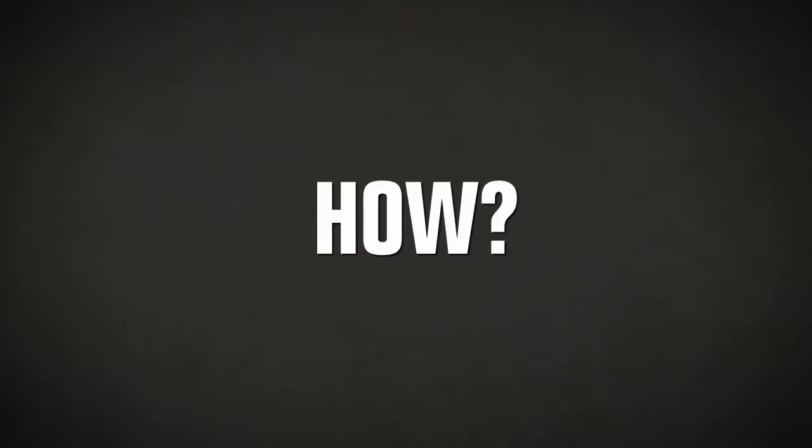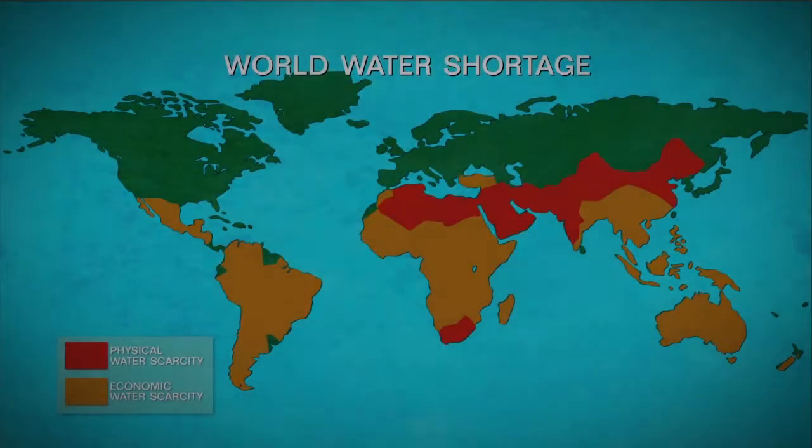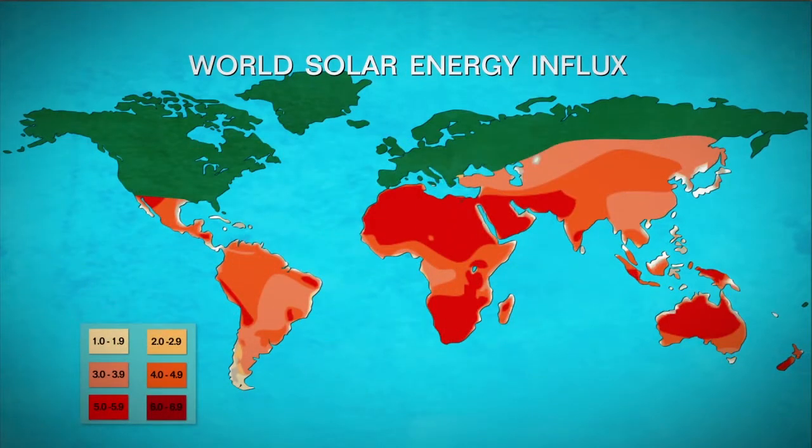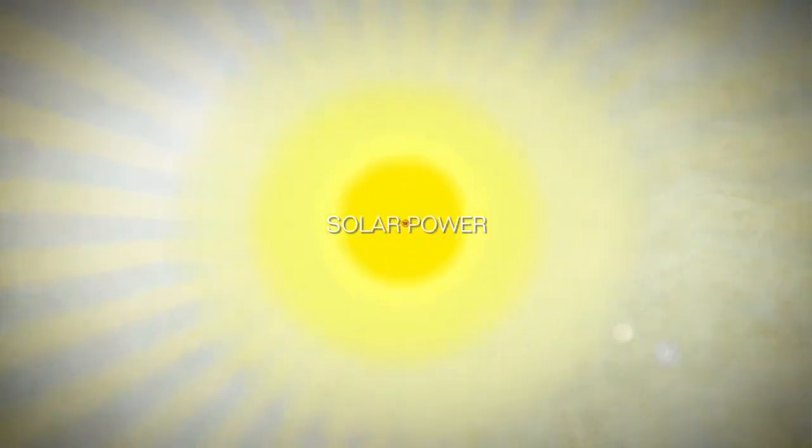So we asked ourselves, how? And then we had an epiphany. The places that need water the most are also the places that receive the most sunlight. And solar energy is the only source with enough abundance to solve the global water crisis.